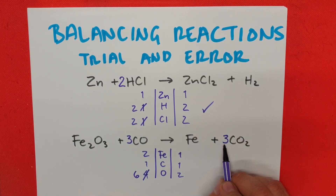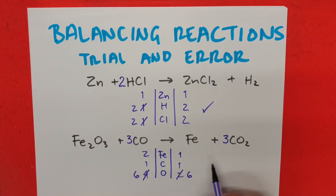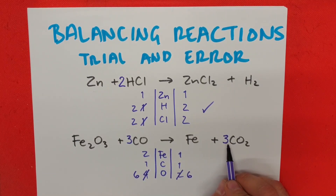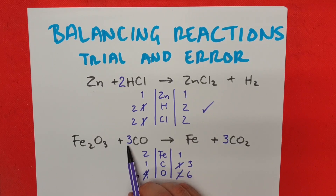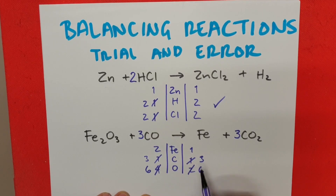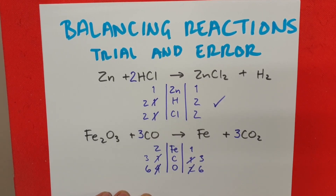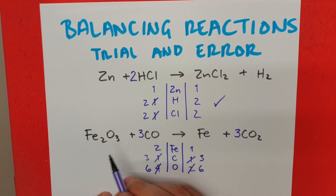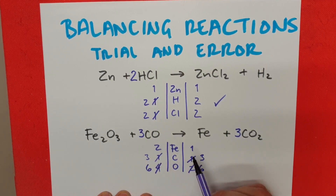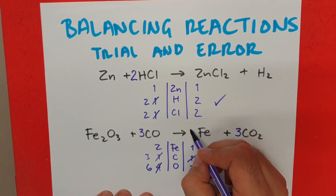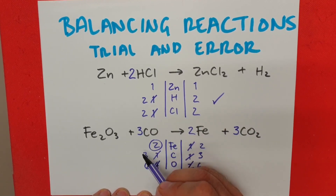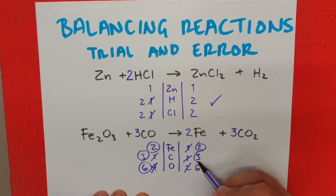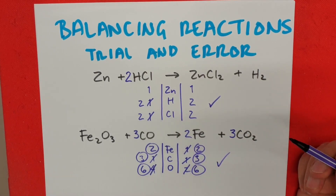Once I put this three, the oxygen becomes six and it's balanced, but it also changed my carbon count to three. However, with the three I added on the reactant side, it also changed the carbon count there to three. So carbon and oxygen are balanced. The last step is iron — we have two iron on one side and one on the other — and we finish by adding a two on that side. Once we have all matching numbers, two, three, six on each side, the reaction is balanced.